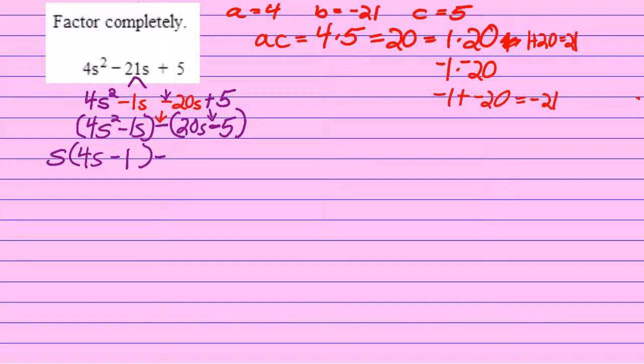In the second set of parentheses, since 20 is 4 times 5, and 5 is 5 times 1, both terms have a 5. I'm going to pull out the 5, and I'll be left with 4s minus 1.